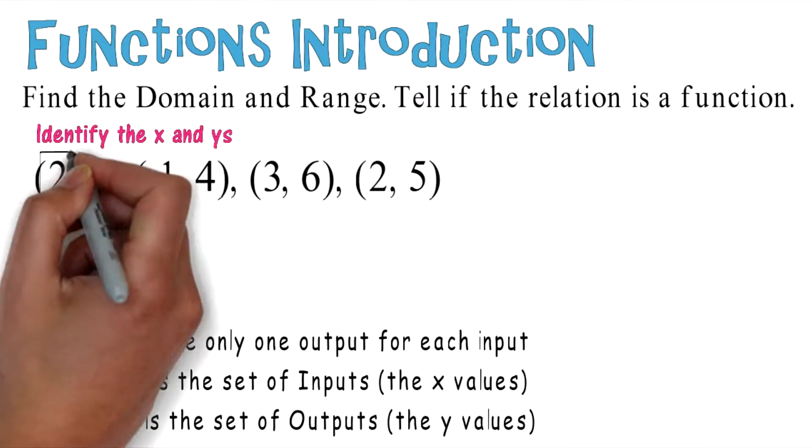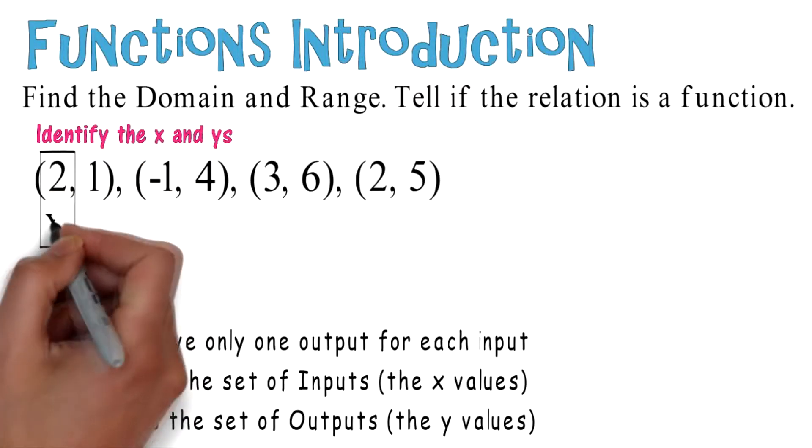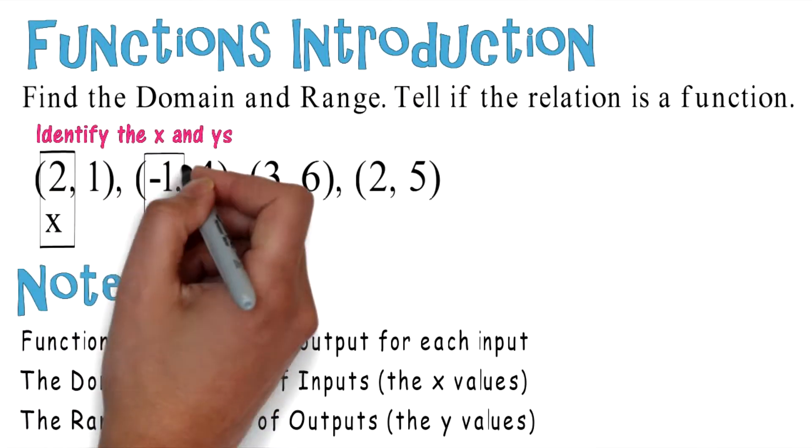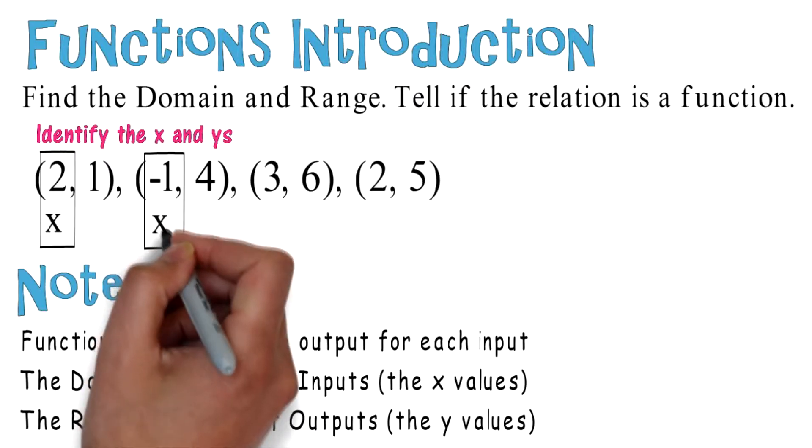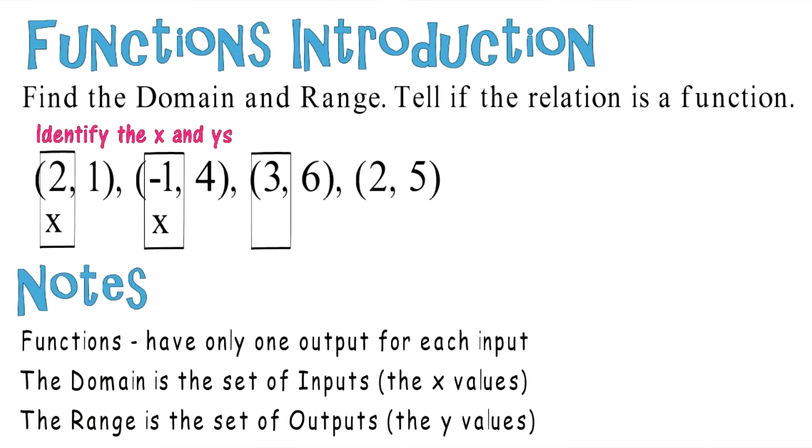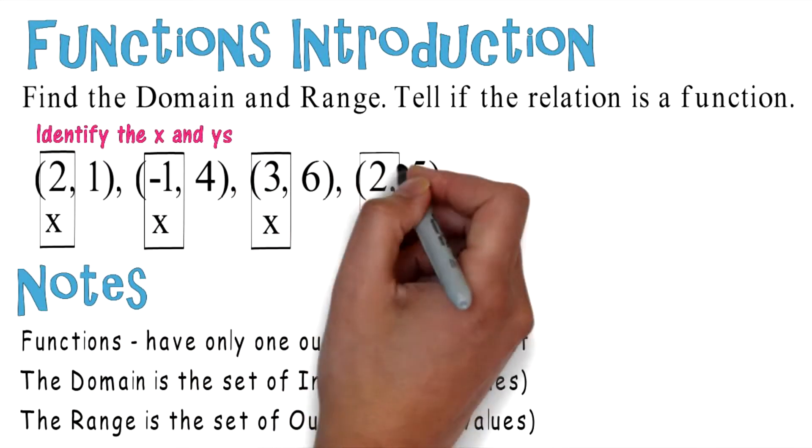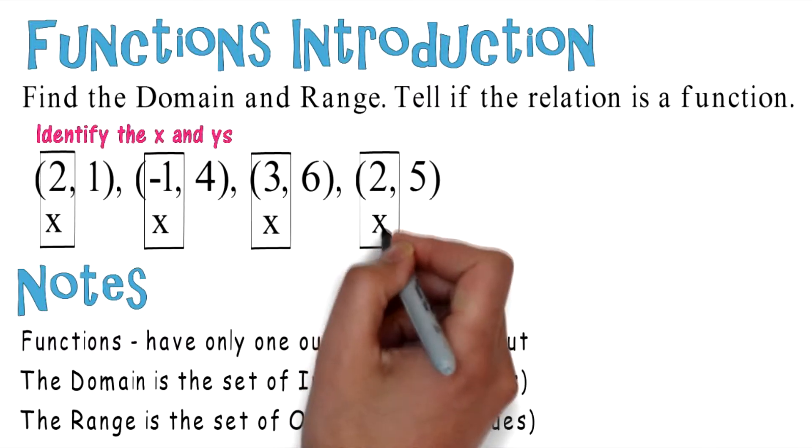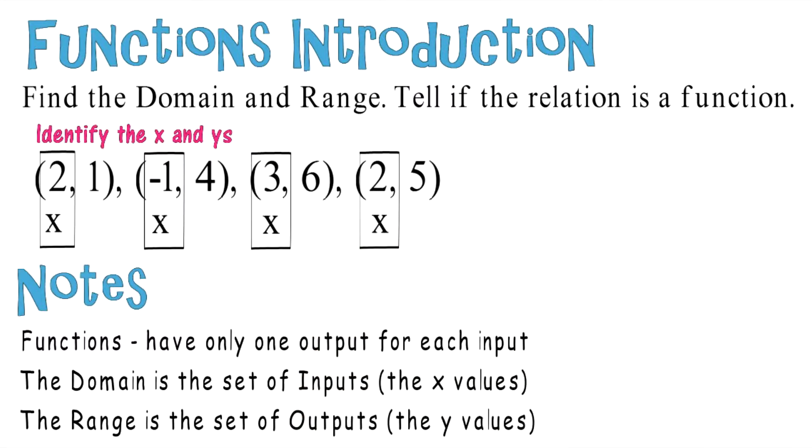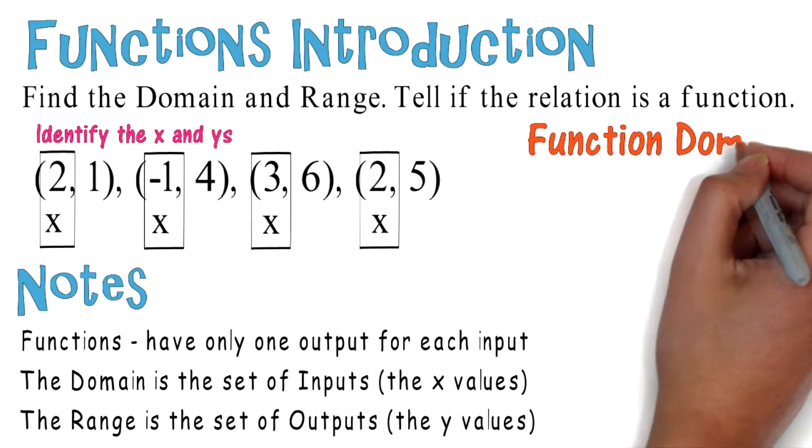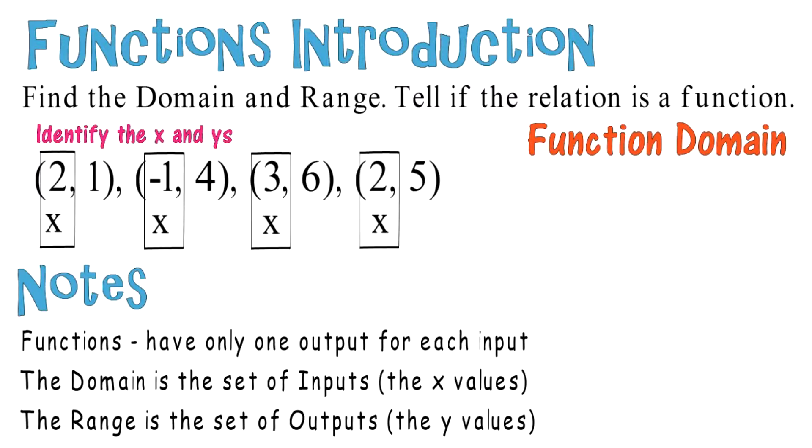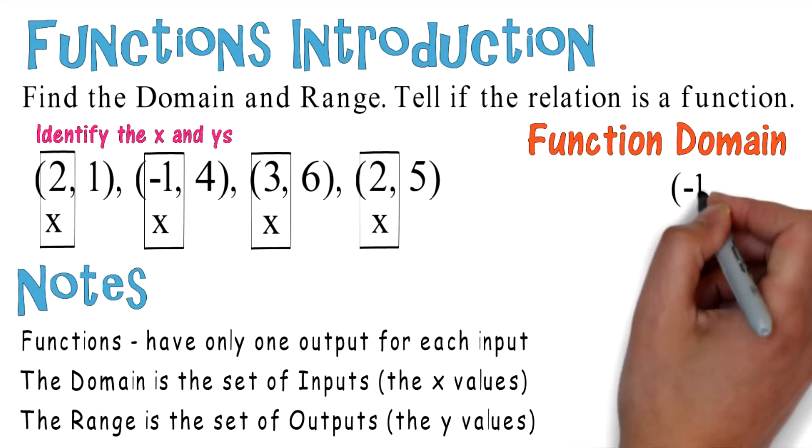Let's take a look at the first one. Two is going to be an x, negative one is also going to be an x, three is going to be an x, and two again will be an x. A good way to remember is that x comes first, and x comes before y in the alphabet.